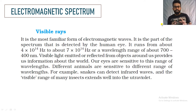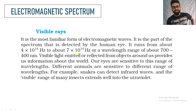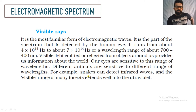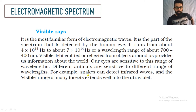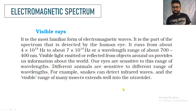Visible light is the range of electromagnetic waves that our eyes can sense. The frequency varies from 4×10¹⁴ Hz to about 7×10¹⁴ Hz, and the wavelength range is 400 to 700 nanometers. There are many animals whose visible range is different — for example, snakes can detect infrared rays, and many insects' visible range extends into the ultraviolet.